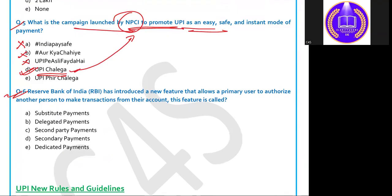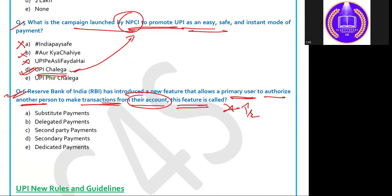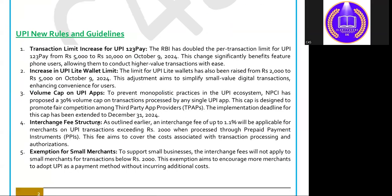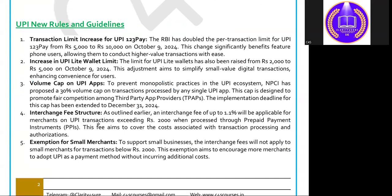Question 6: RBI has introduced a new feature that allows the primary user to authorize another person to make transactions from their account. You have to name this feature. This was in the news in September, making it a potential question. The name of the feature is the 'Delegated Payment' feature — where the primary user delegates account operation to a secondary person.